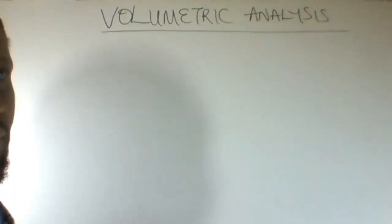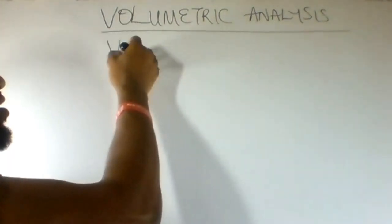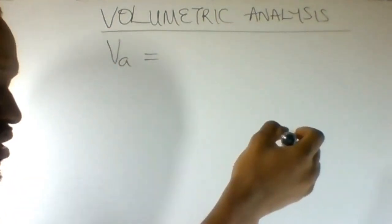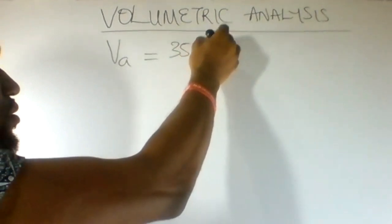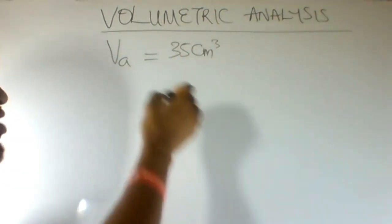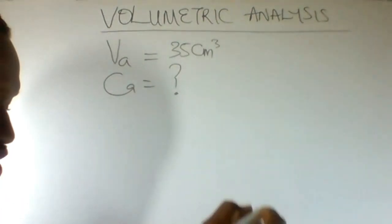We can solve this question by writing down the values given in the question. The volume of the acid is given as 35 centimeter cube. The concentration of the acid is unknown. We're not given that in the question.